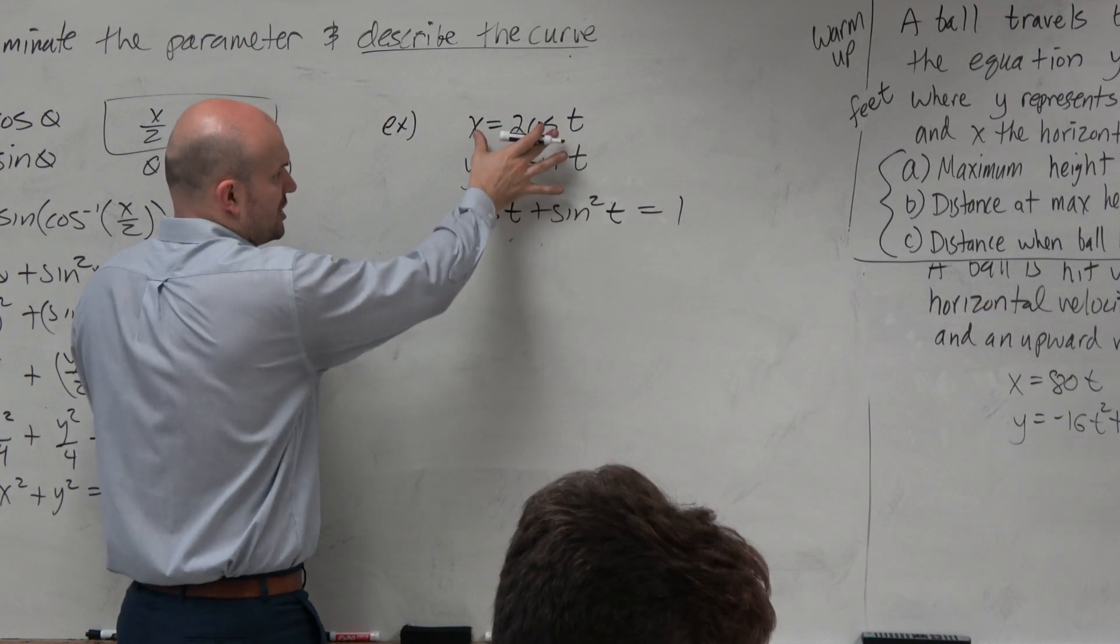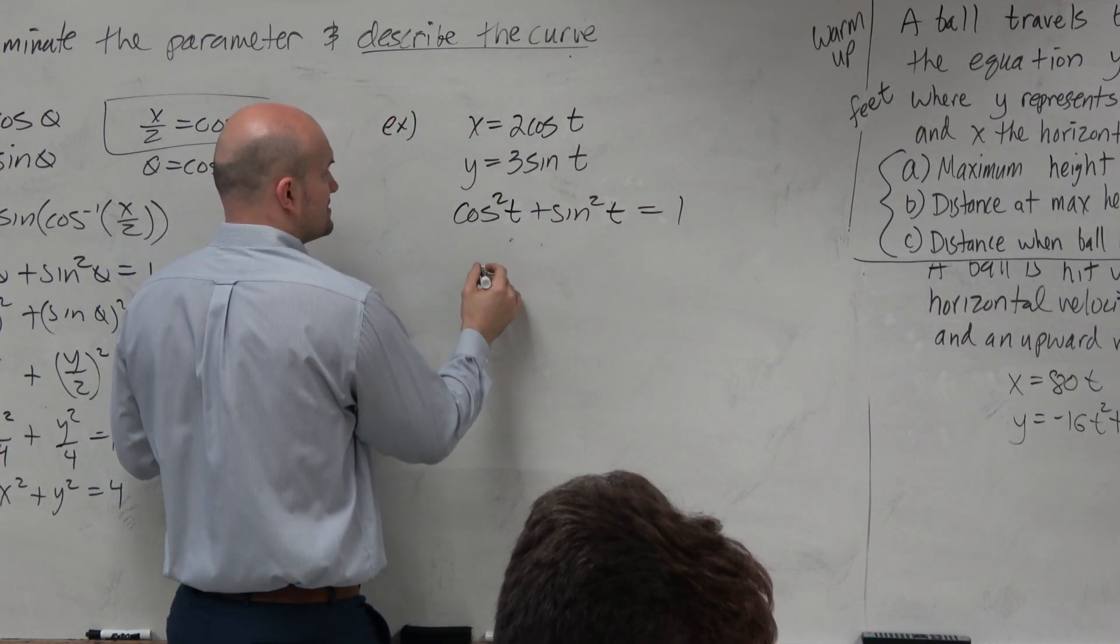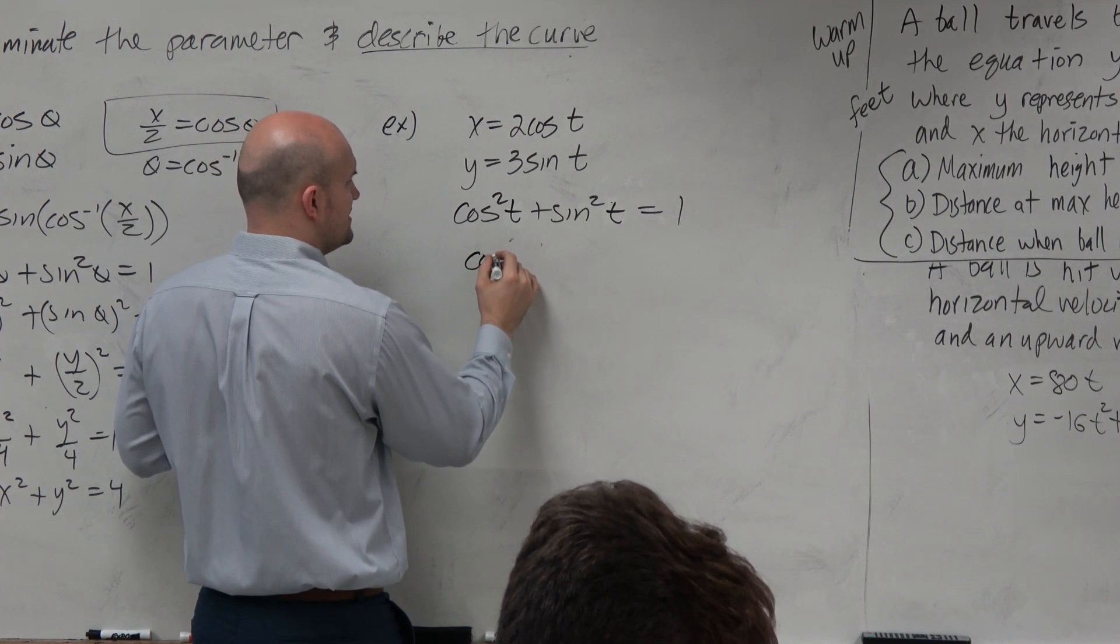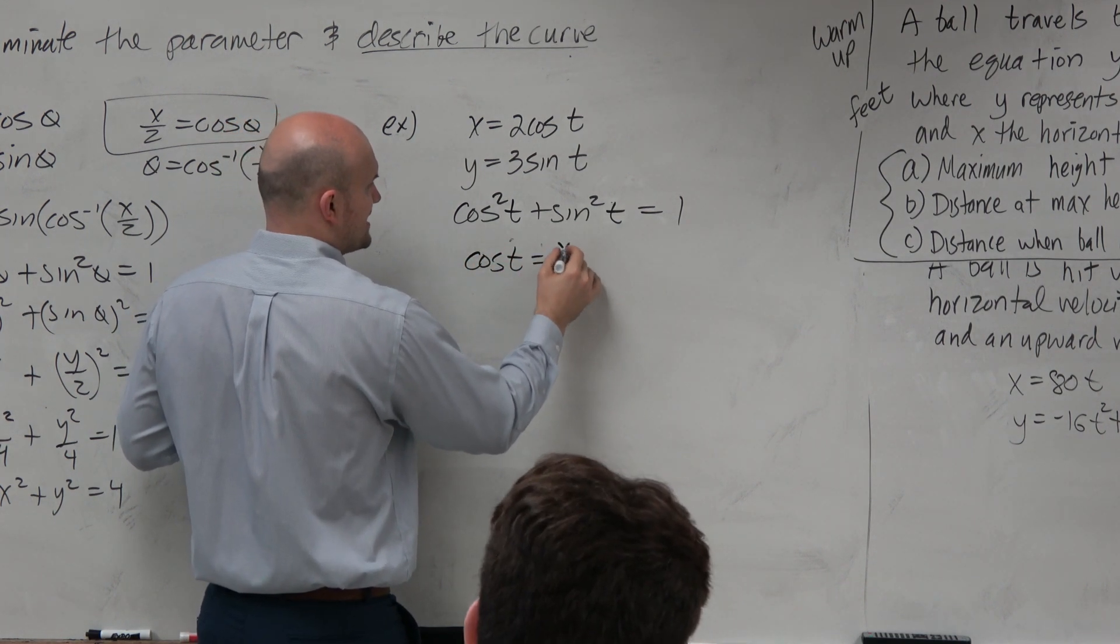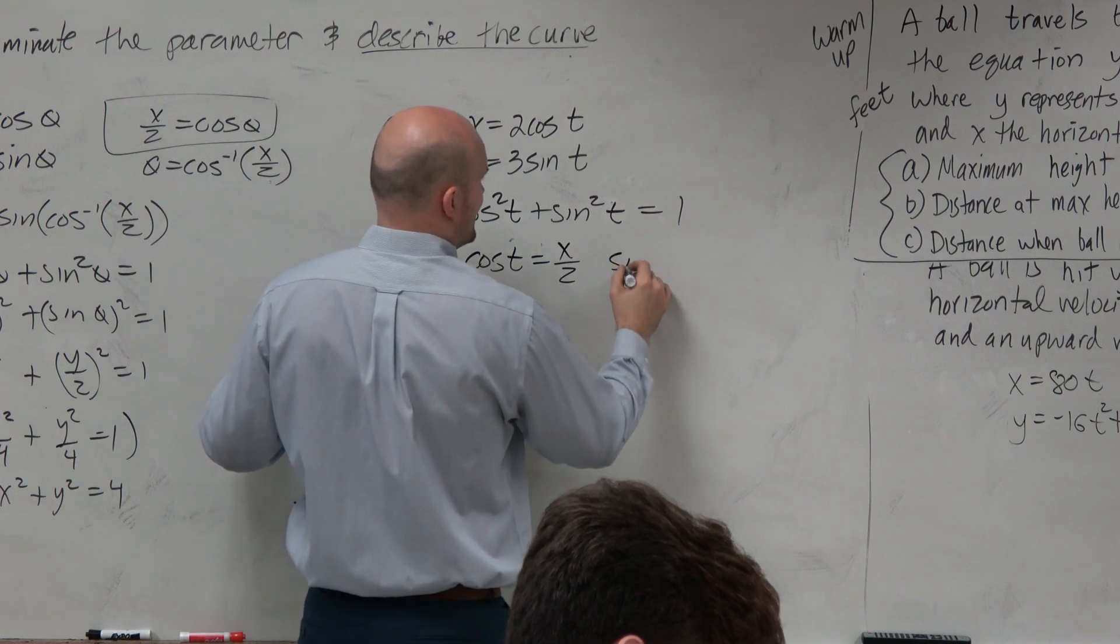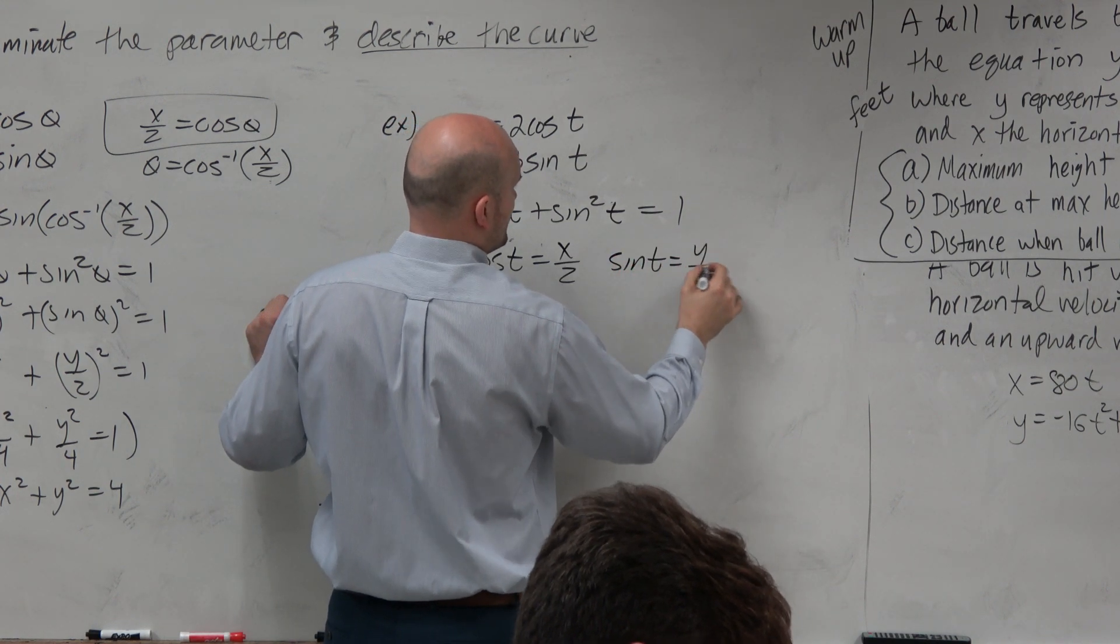So let's go ahead and solve for, I'm sorry, solve for cosine of t. When I solve for cosine of t, I get x over 2. When I solve for sine of t, I get y over 3.